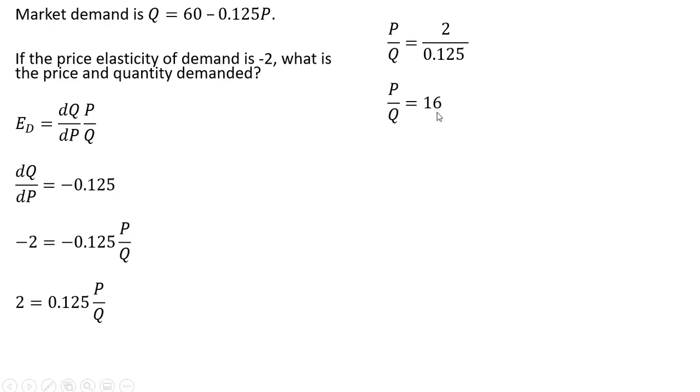And then we'll divide through by 0.125, and that gives us 16 on the right-hand side of the equation. And then multiplying through by Q, price equals 16Q. We're going to take this price equals 16Q, and where we see P in the demand equation, we're going to plug in 16Q.